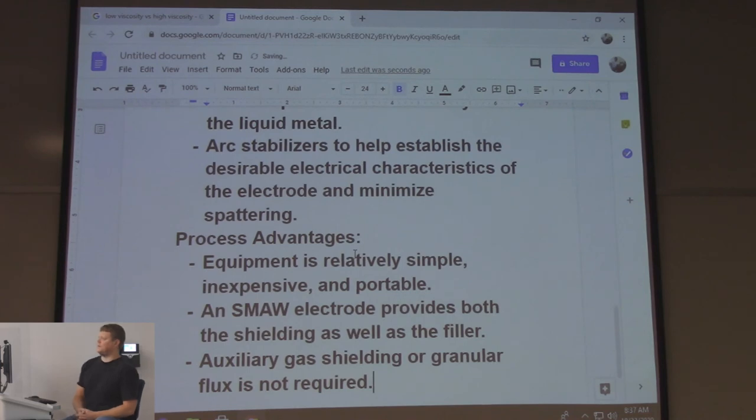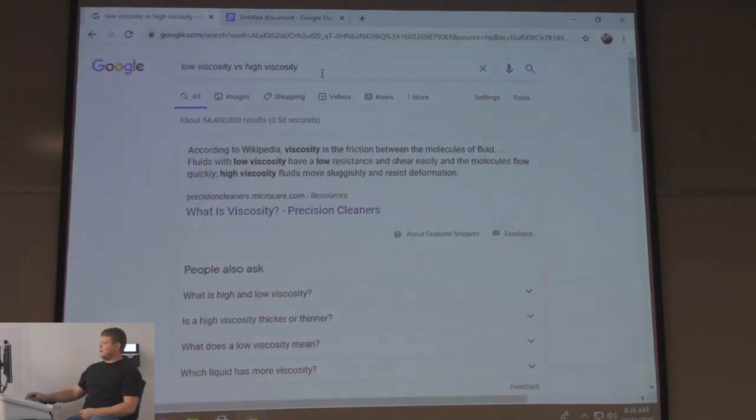Auxiliary shielding or granular flux is not required. You don't need the bottle. Granular flux would be submerged arc. Submerged arc welding is not underwater welding. It is a mechanical process where a wire comes down and the flux buries the arc so you don't see it submerged under the flux. Granular flux just pours on it as it's doing the weld.